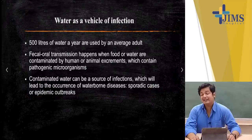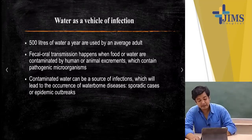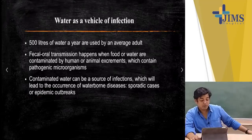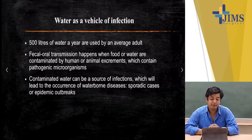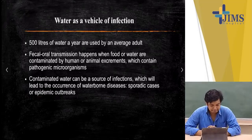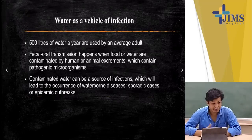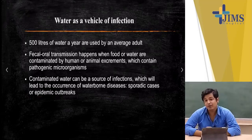Waterborne diseases, as the name suggests, are basically transmitted via water. What happens is the water acts as a vehicle of infection — if the water is not there, this kind of infection cannot be spread. Water is a basic necessity of human beings; 500 liters of water is being used per year by an average adult. Feco-oral transmission — that means from the feces to your oral part — happens when food or water are contaminated by human or animal excreta which contains pathological organisms.